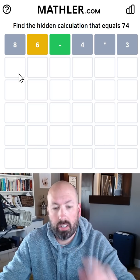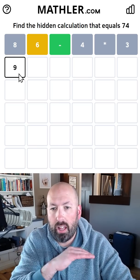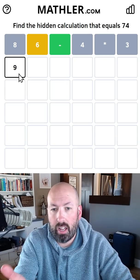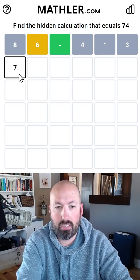Actually, yeah, it has to be, because if we're in the 90s, if we do 90-something, we're going to have to subtract at least 16, and we're not going to be able to take a single digit, divide it by a single digit, and get a two-digit. So it has to be 70-something.